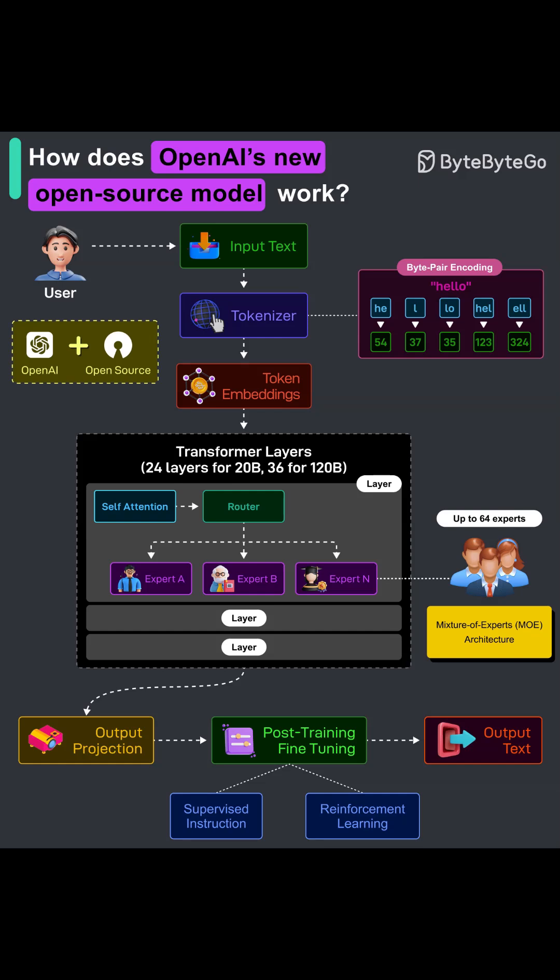So that's the pipeline: input text, BPE tokenization, embeddings, transformer layers with attention and a router, sparse activation with top two of up to 64 experts, output projection, and post-training to deliver safe, coherent responses — all optimized for strong performance at low cost.